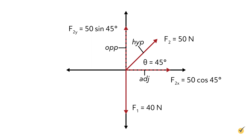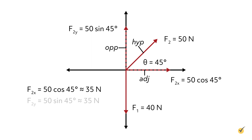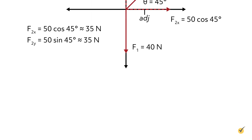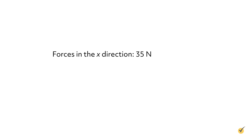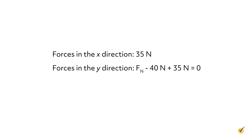Using the values given in our problem, we get about 35 newtons for both components. F2x equals 50 cosine of 45 degrees, which equals about 35 newtons. And F2y equals 50 sine of 45 degrees, which also equals about 35 newtons. The magnitude of the components is the same because of the 45 degree angle. The wagon is on the ground, and whenever an object is on the ground there is a normal force — an upward force that the ground exerts on the wagon. This is why the wagon does not move in the y direction. Putting everything together, we get forces in the x direction: 35 newtons. Forces in the y direction: F newtons minus 40 newtons plus 35 newtons equals zero.